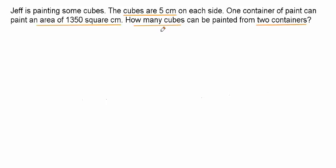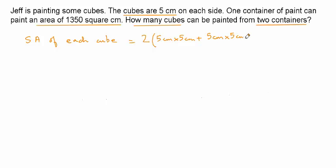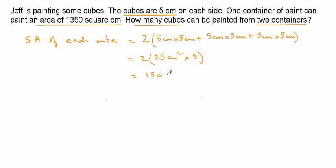The surface area of each cube is given as 2 times (length × width + length × height + width × height). Remember they are all equal to 5, so we have 2 times (5cm × 5cm + 5cm × 5cm + 5cm × 5cm), which is 2 times 25 cm² × 3, because there are 3 terms each equal to 25. This is equal to 150 square centimeters — the surface area of each one of these cubes.